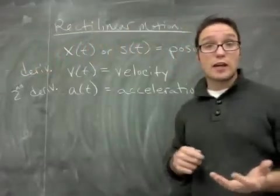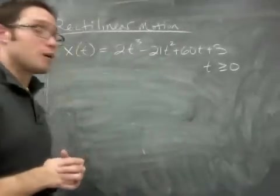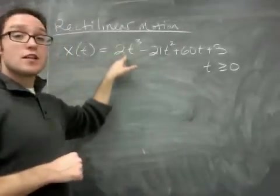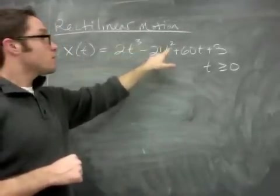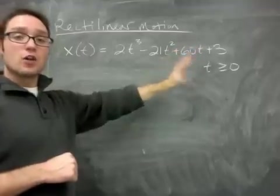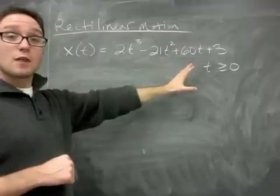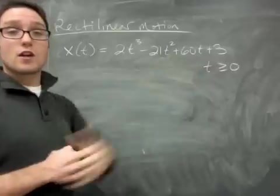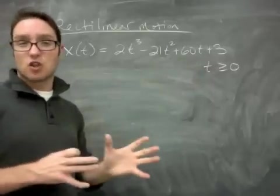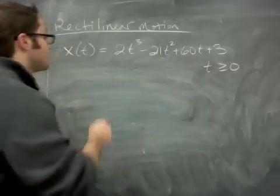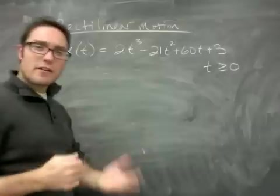So let me do a quick example. The position function is 2t³ - 21t² + 60t + 3. Now they don't always give you this constraint, but they sometimes do. Most of the time they do. Time is greater than or equal to 0 because you have some initial position.